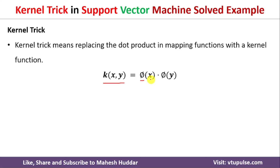Whenever we use a mapping function in SVM, we need to convert the data from input space into feature space — that is phi of x. We do the same for the second data point, phi of y, and for any other data points as well. Once converted, we need to perform the dot product. This includes a lot of computation: we must apply the mapping function and then perform the dot product on each data point, which is computationally costly and time-consuming.